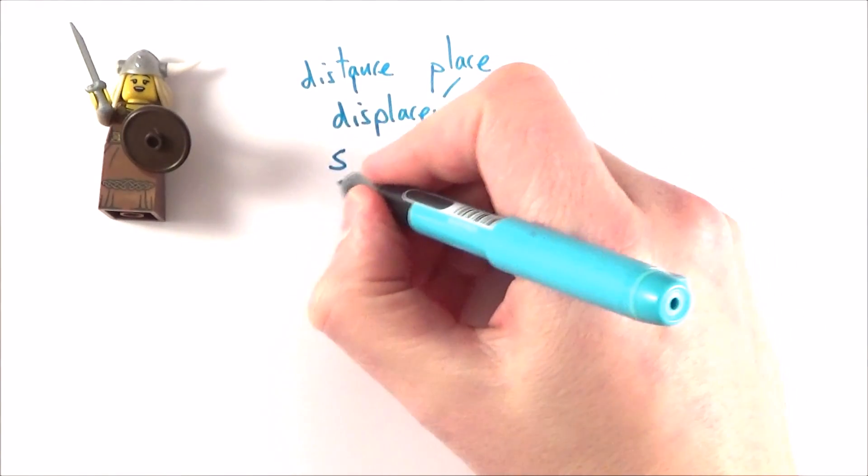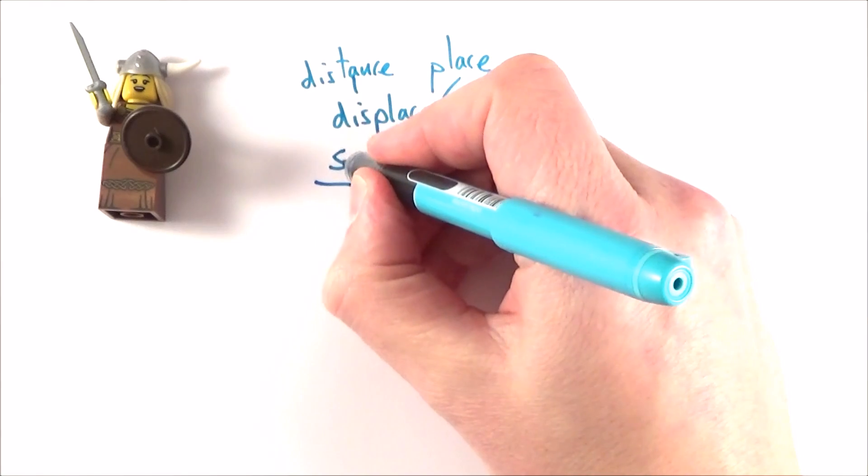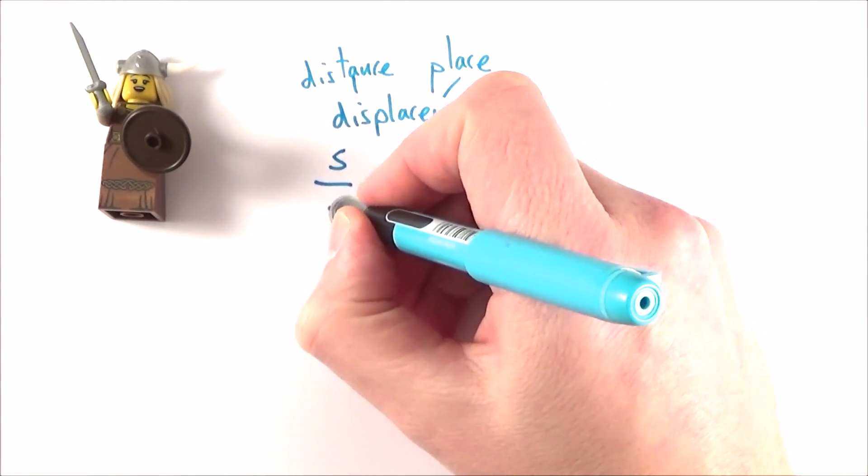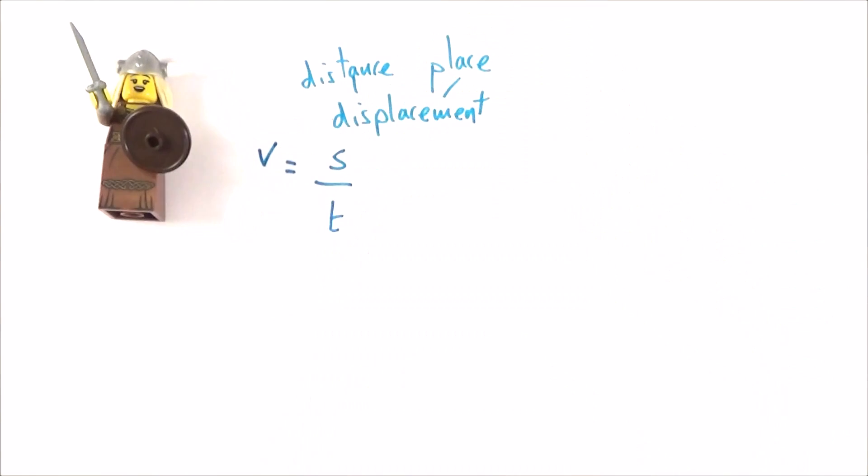Now if we think about how quickly she moved, so maybe how quickly she changed her displacement over a certain time t, we can work out her velocity.